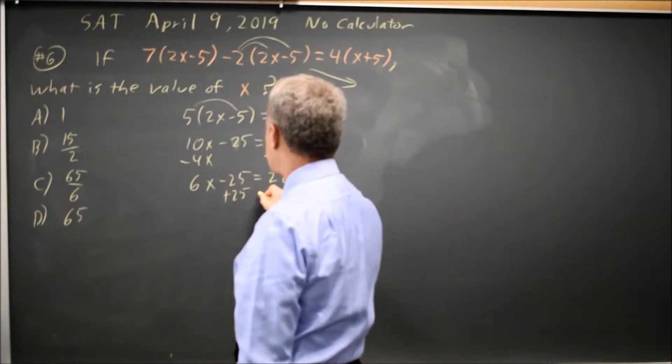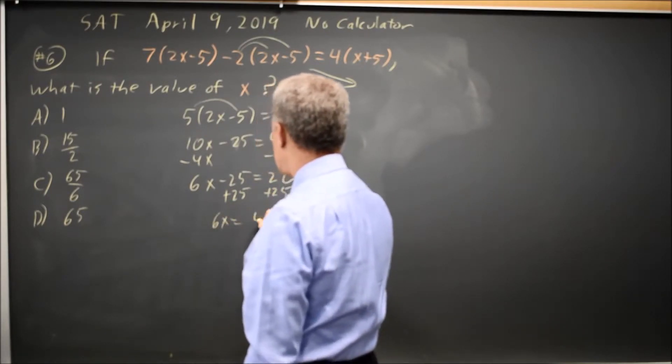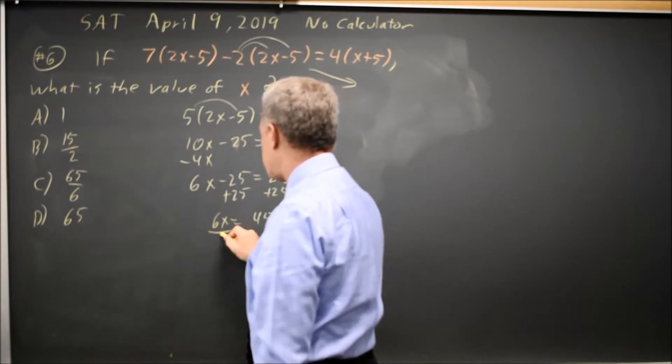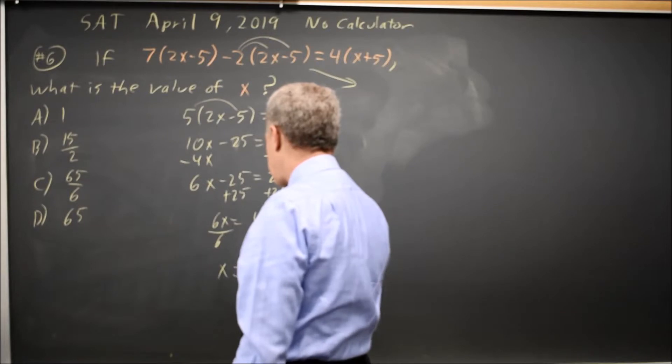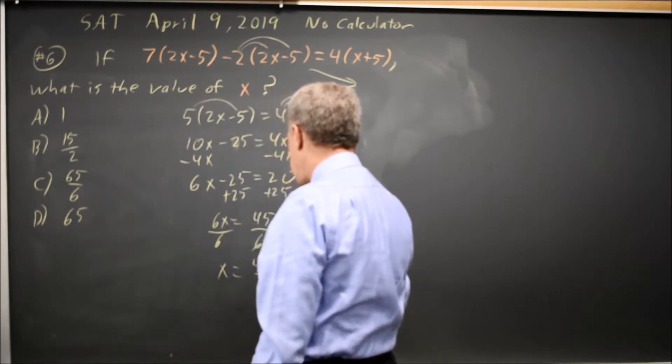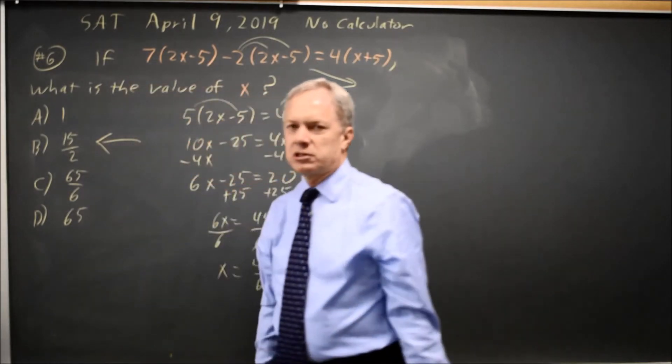Add 25 to both sides, and that's 6x equals 45. Dividing both sides by 6, x equals 45 over 6, which is 15 over 2. So, that's choice B.